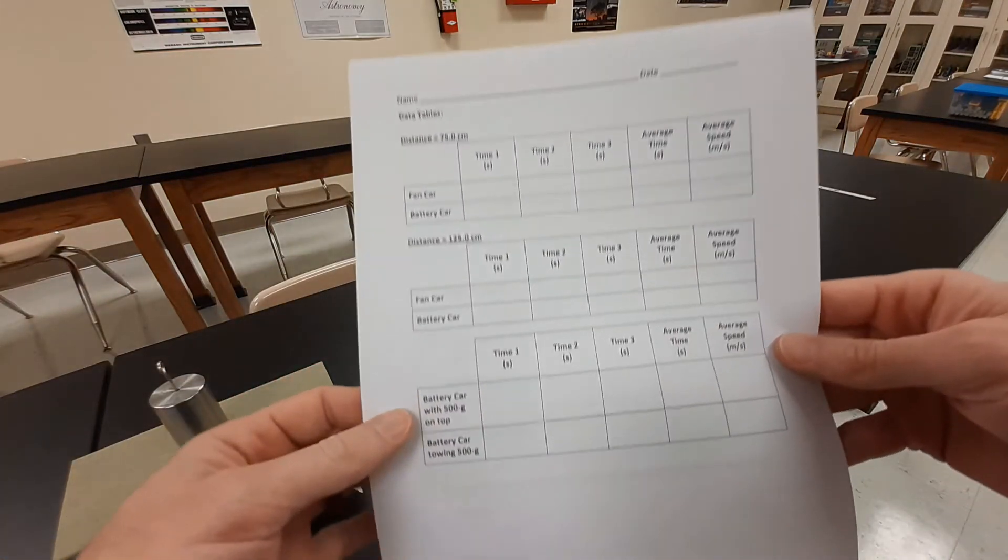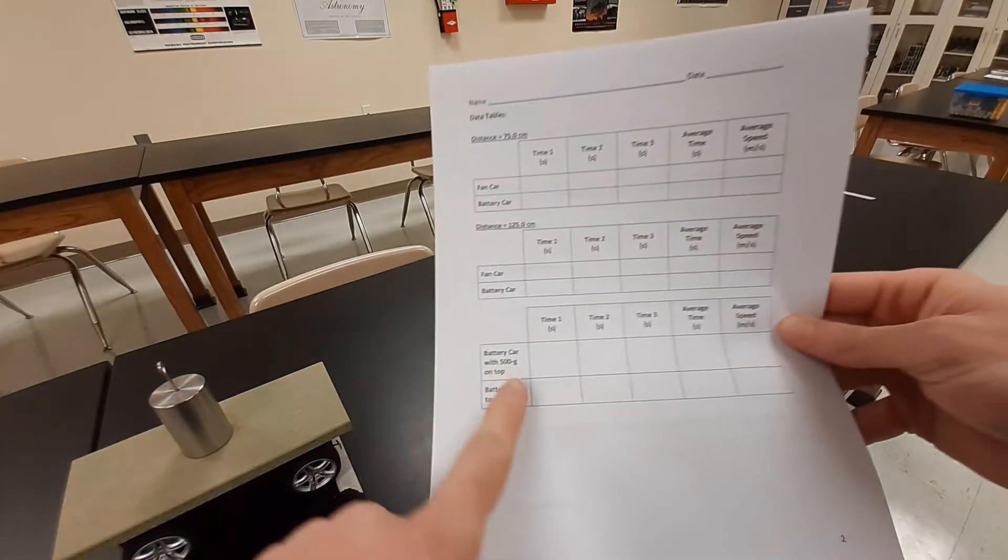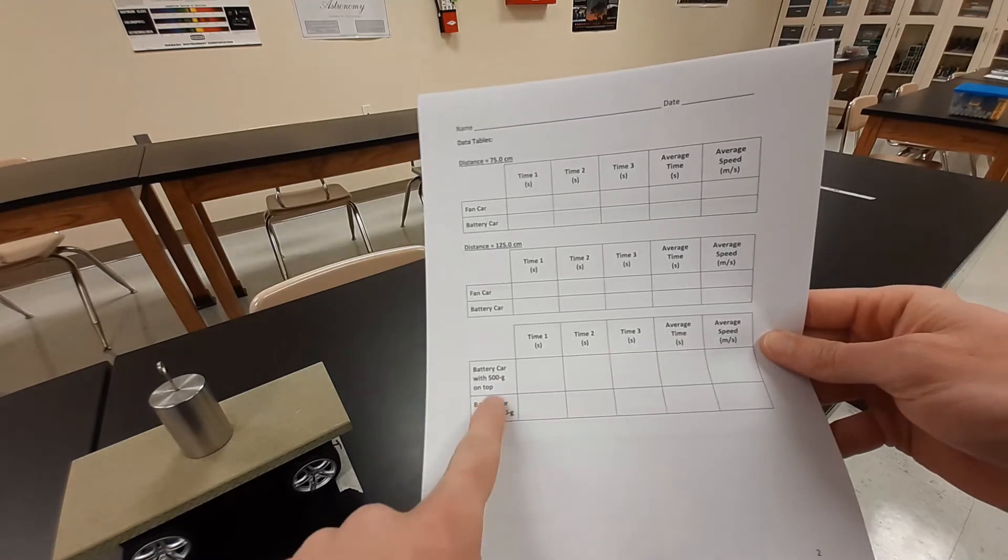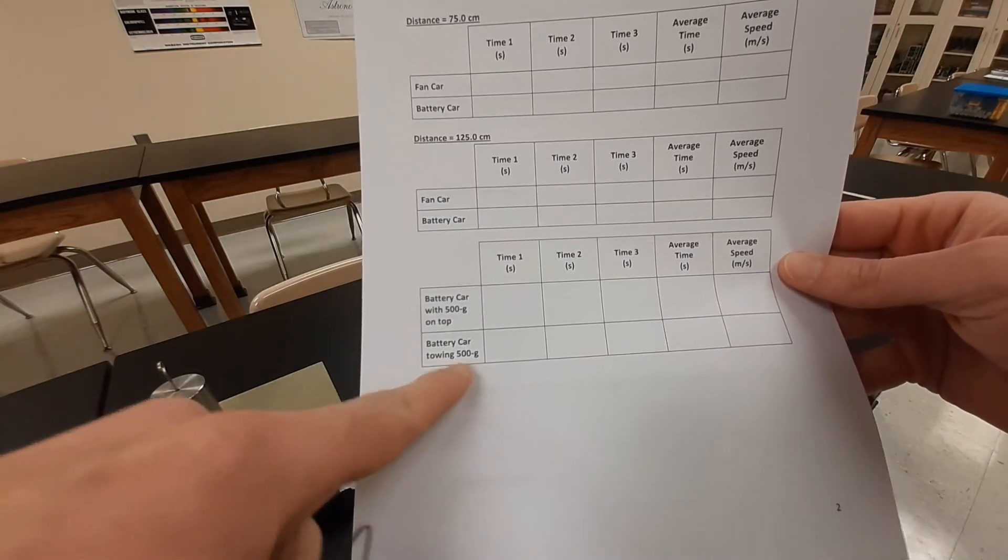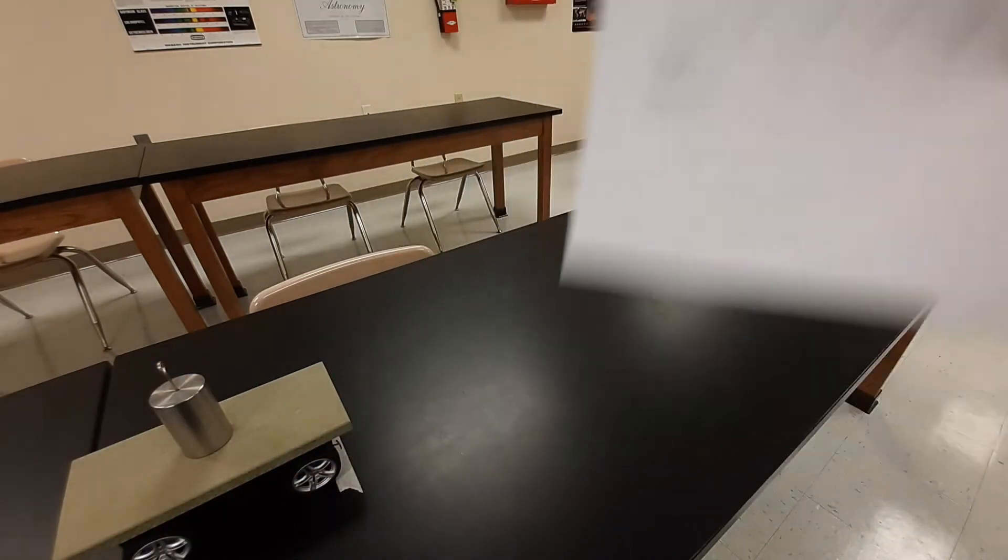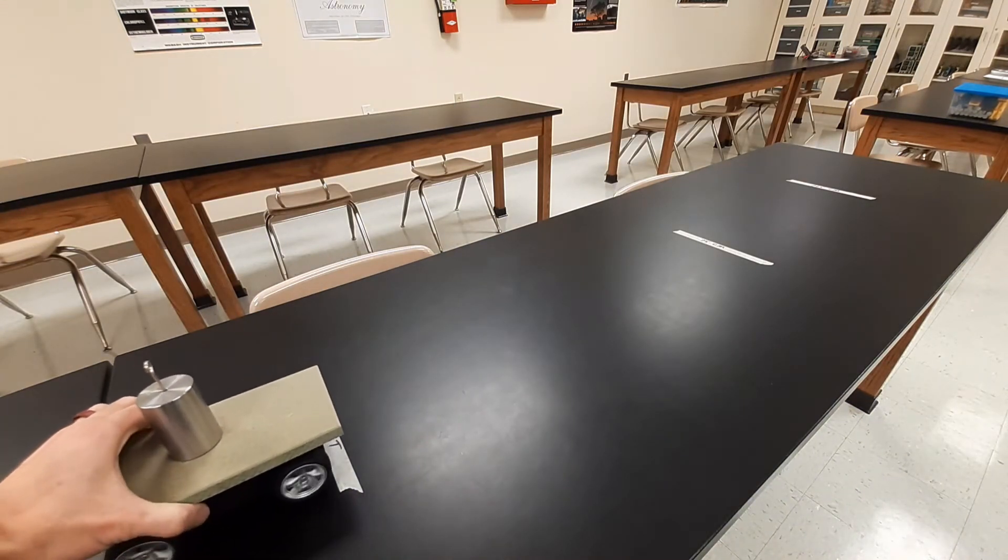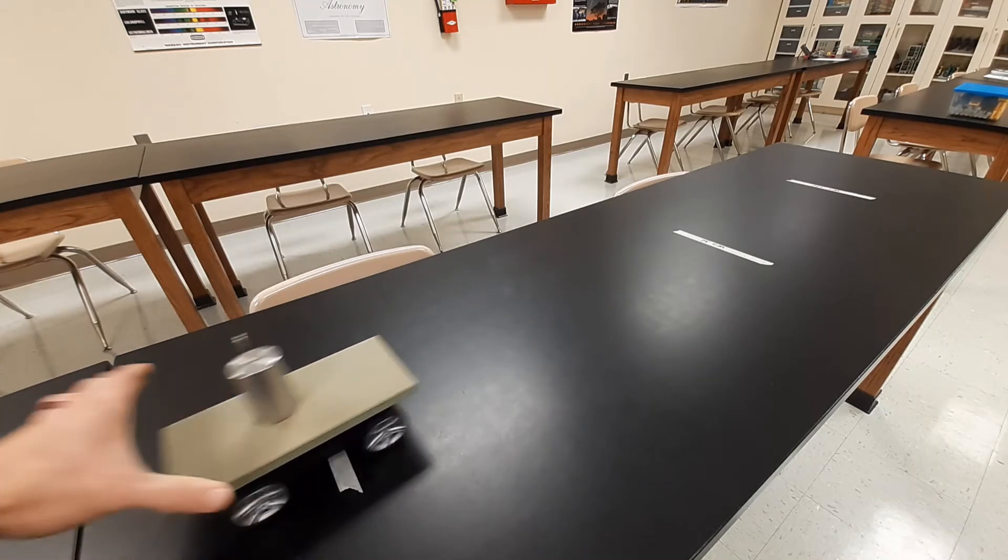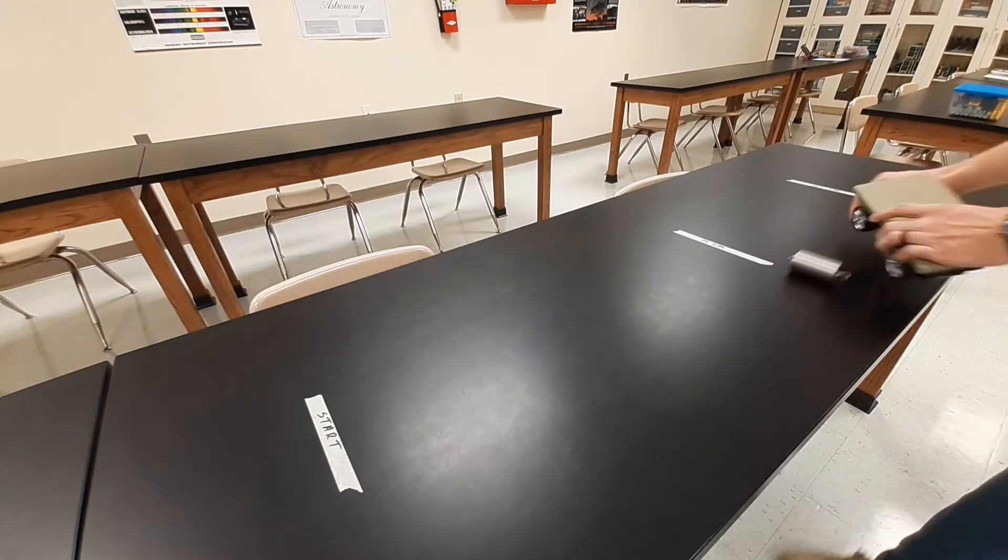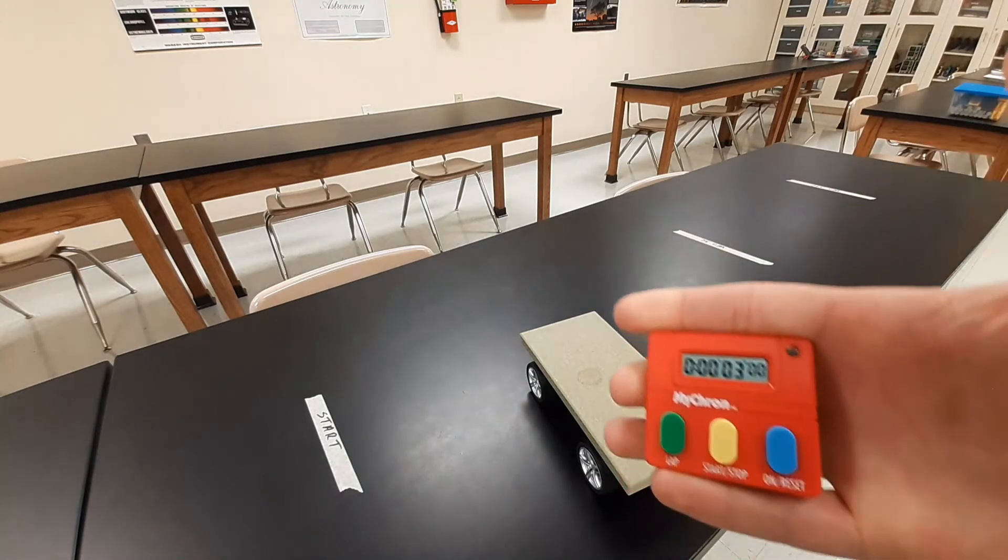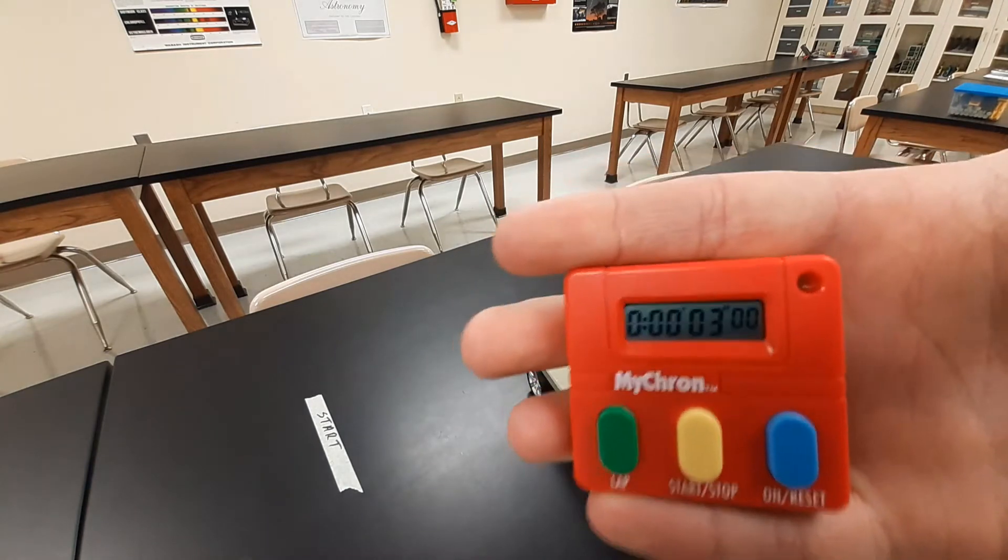All right so now we're down here on this next part. We're still using this battery powered car but we're going to do it three times with the 500 grams on top of the car and then three times like I showed you earlier with the materials towing the 500 grams behind the car. All right so first one 500 grams on top. Ready and go. 3.00 seconds. 125 centimeters with 500 grams on top.